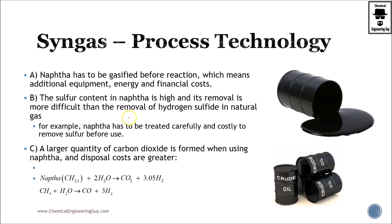Now we're going to see naphtha reforming. In order to reform naphtha, you have to gasify it first — remember naphtha is a liquid. You must gasify it by increasing the temperature, which means heat transfer from another fuel. Typically you will need to add more equipment. It's not the same as feeding natural gas directly to the process; naphtha must be preheated, which will cost energy and money.